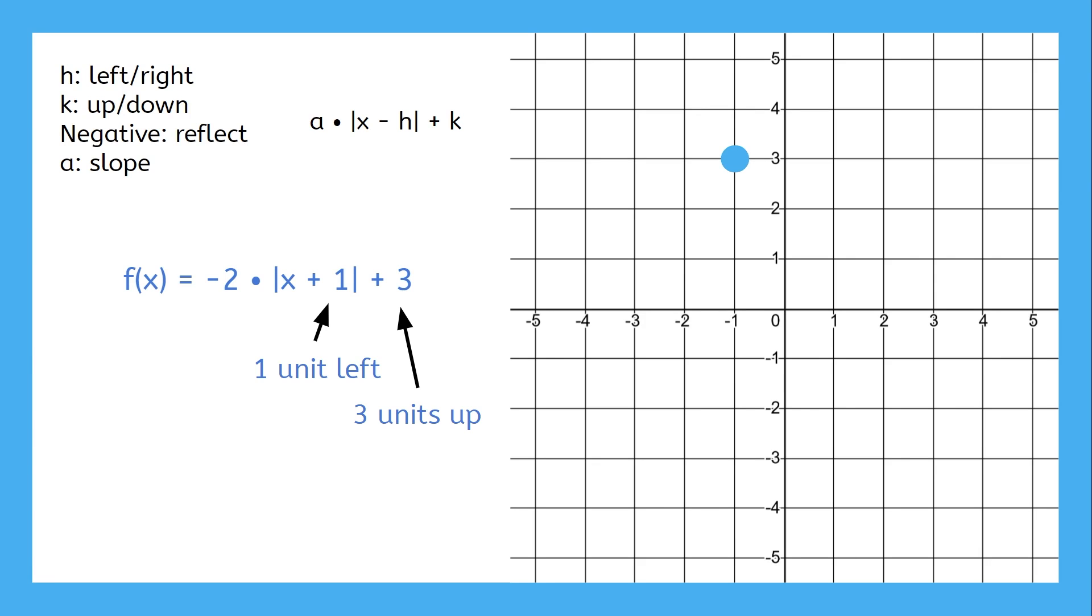Now, we've found where the vertex will be, so the next step is finding out whether or not the absolute value is right side up or upside down. Because the sign on the multiplier is negative, this graph will be reflected upside down.